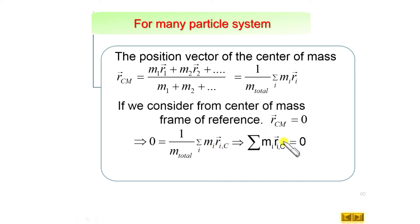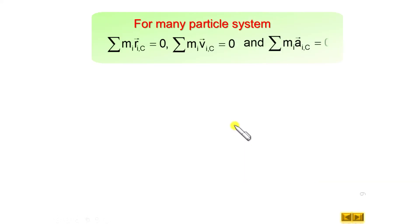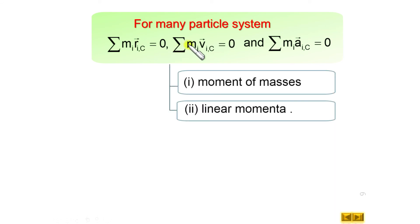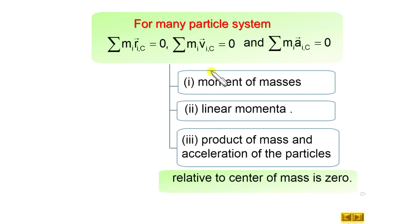If we differentiate Σ(m_i · r_ic) = 0 with respect to time, we get Σ(m_i · v_ic) = 0, which is the total linear momentum of the system relative to the center of mass equals zero. Differentiating again gives Σ(m_i · a_ic) = 0, which is the sum of all forces as observed from the center of mass frame. So the moment of masses, linear momentum, and net force sum are all zero when calculated with respect to the center of mass frame.